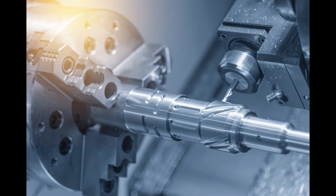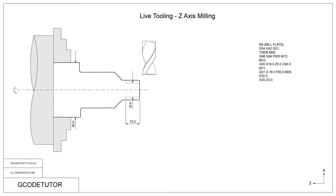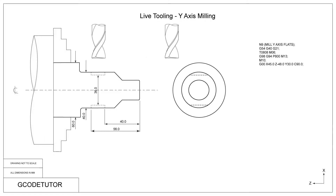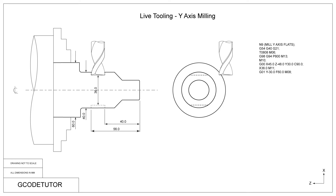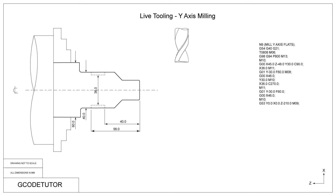The CNC lathes you find in a modern machine shop have a lot more than just two axes. Most have more than one spindle, live tooling, and some have more than one turret. I cover every type of operation you need to make a component on a lathe and a CNC machining centre, including how live tooling works and how we use it to create bores and holes in different parts of the machine, including milling flats using a Y-axis.